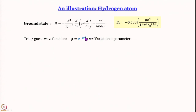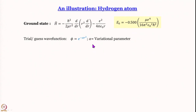Let us take a trial or guess wave function phi equal to e to the power minus alpha r squared, so alpha is the variational parameter. I am not using q as a variational parameter just yet. Let us see what happens if I just vary alpha. If it is not good, then I can try with 3, 4, and so on in the exponent. I am choosing e to the power minus alpha r squared because it is a well-behaved wave function — it goes to 0 at r equal to infinity, the Gaussian function.